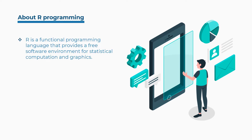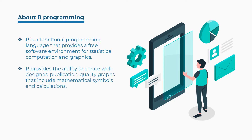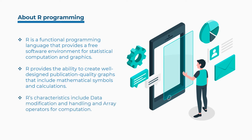R is a functional programming language that provides a free software environment for statistical computation and graphics. R provides the ability to create well-designed publication quality graphs that include mathematical symbols and calculations. R's characteristics include data modification and handling and array operators for computation.